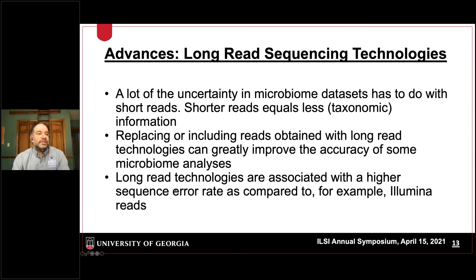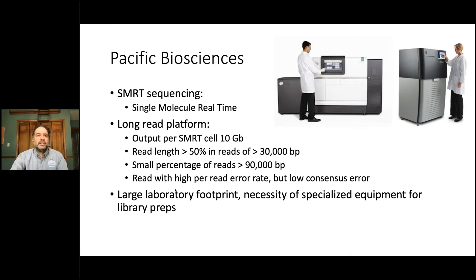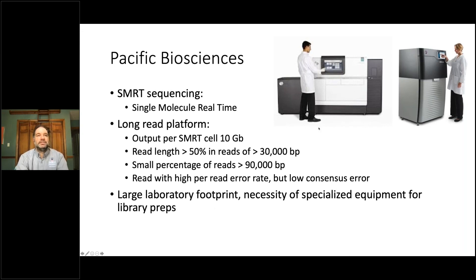The main problem with long-read technologies — though this is improving almost daily — is their higher sequencing error rate compared to Illumina reads. One of the early players in long-read technology is Pacific Biosciences with their SMRT (single molecule real-time) sequencing. One thing to keep in mind is that PacBio has a very large footprint — even their smaller sequencers are large — and they require a lot of specialized equipment for library preparation.